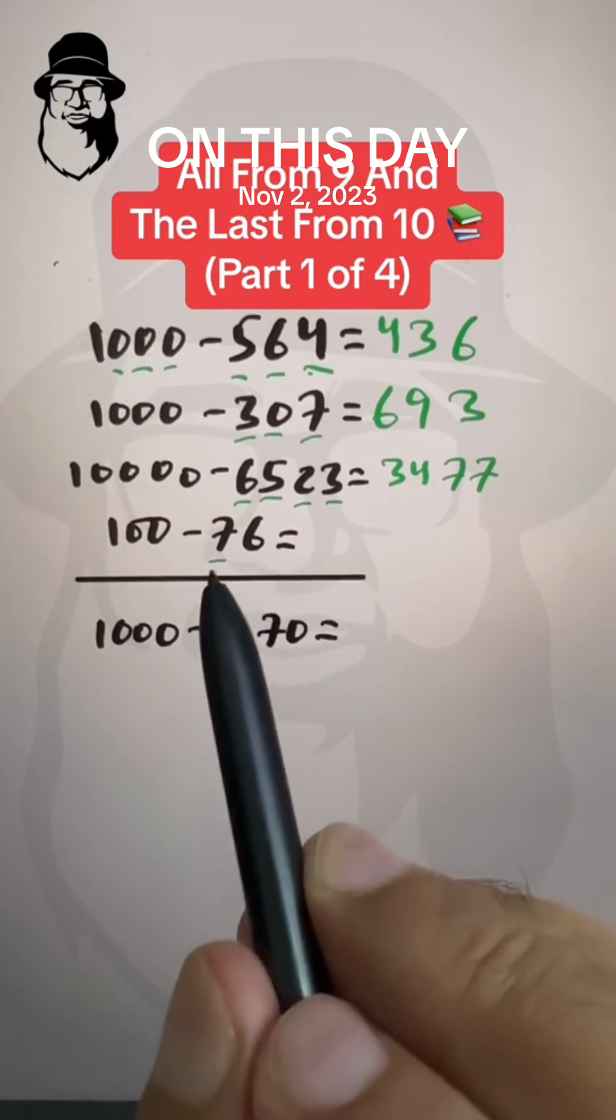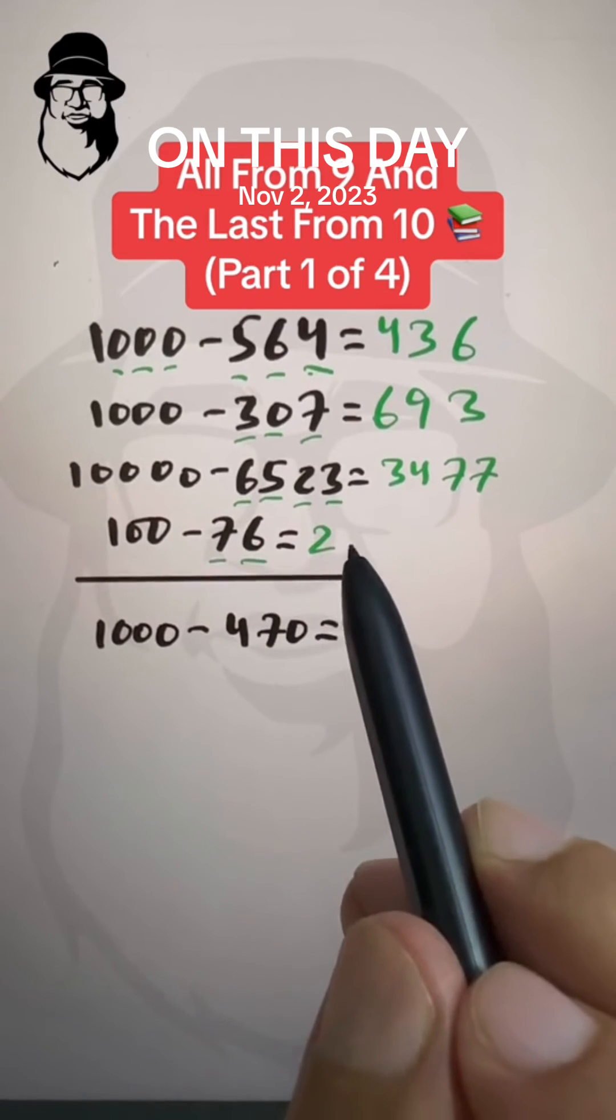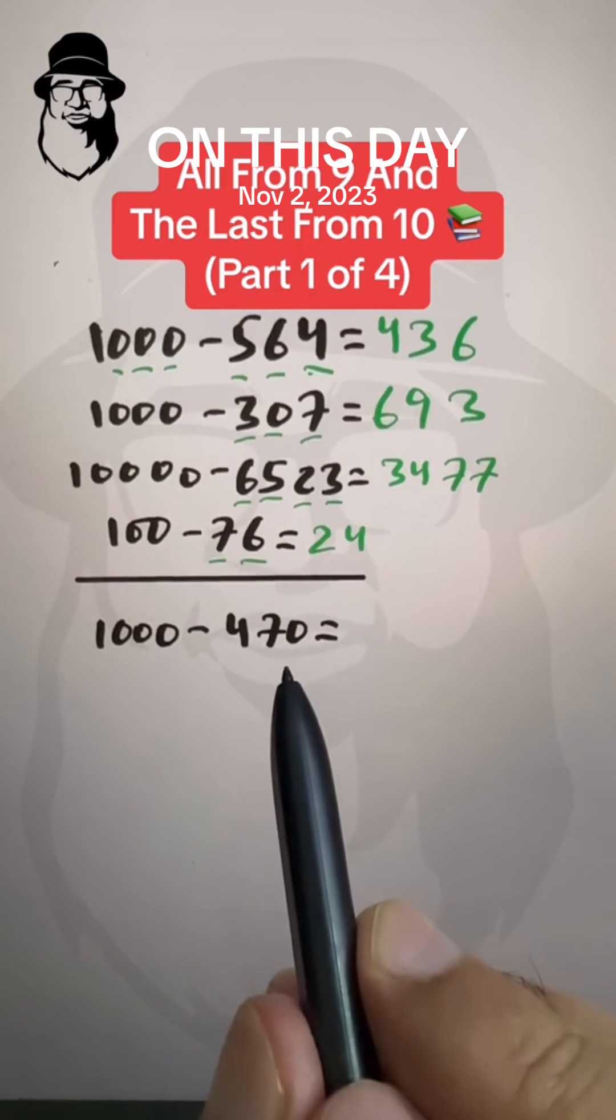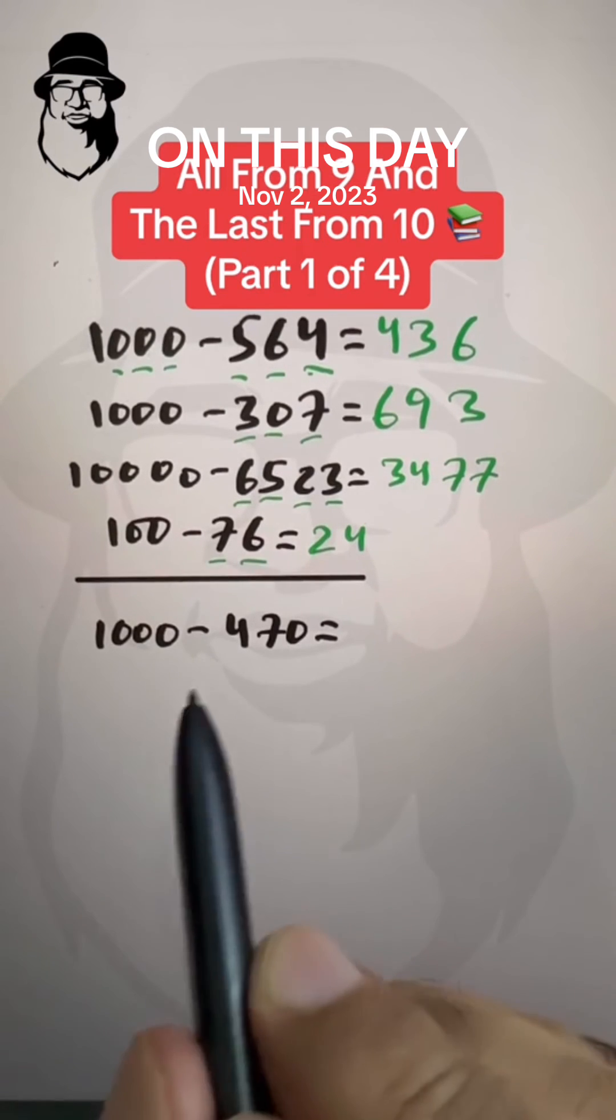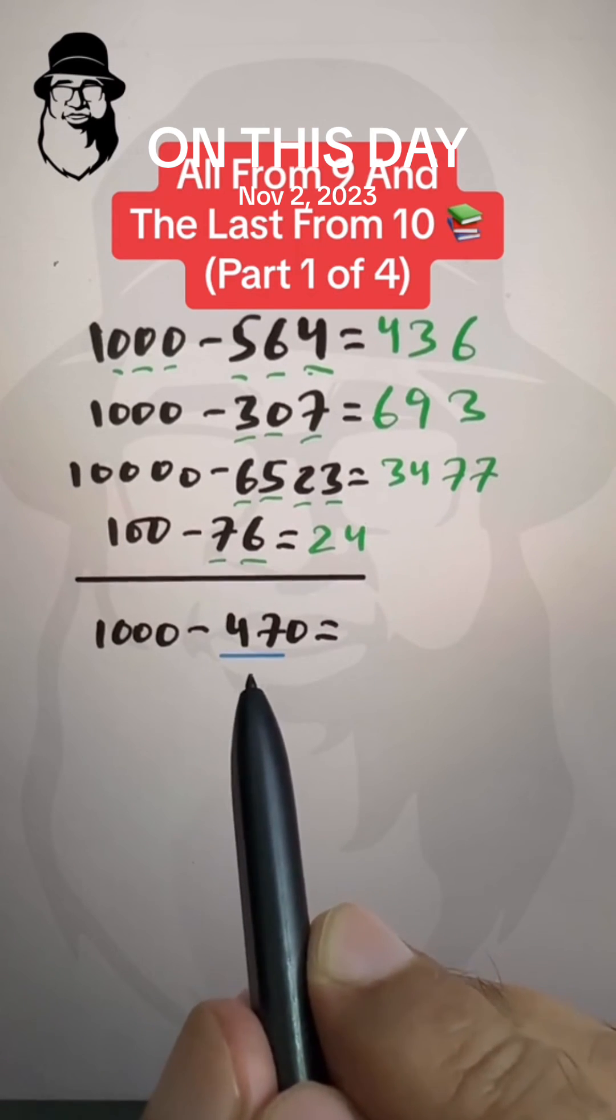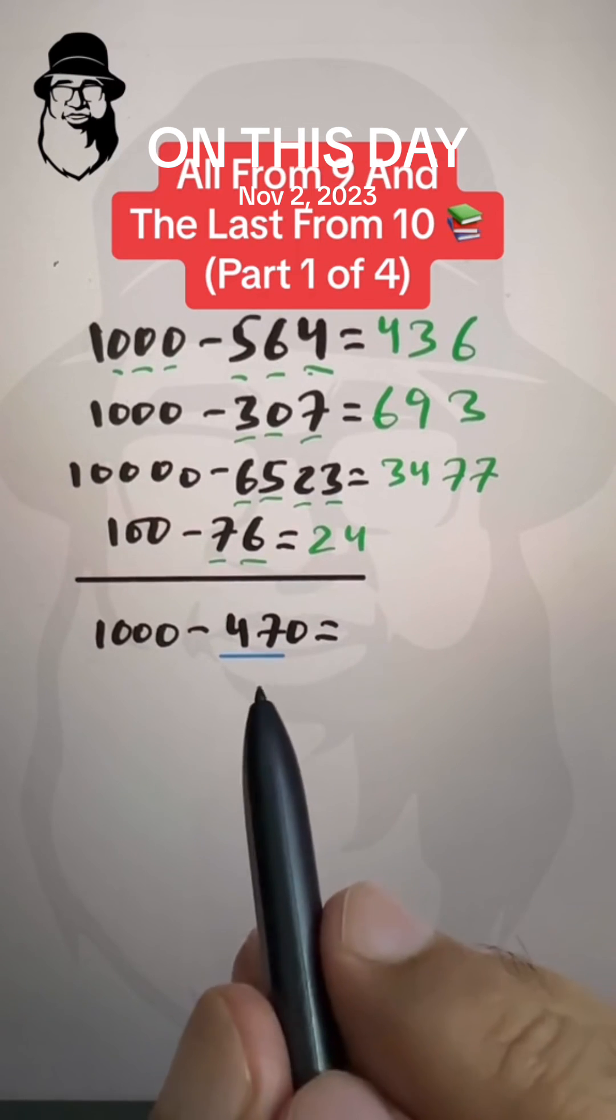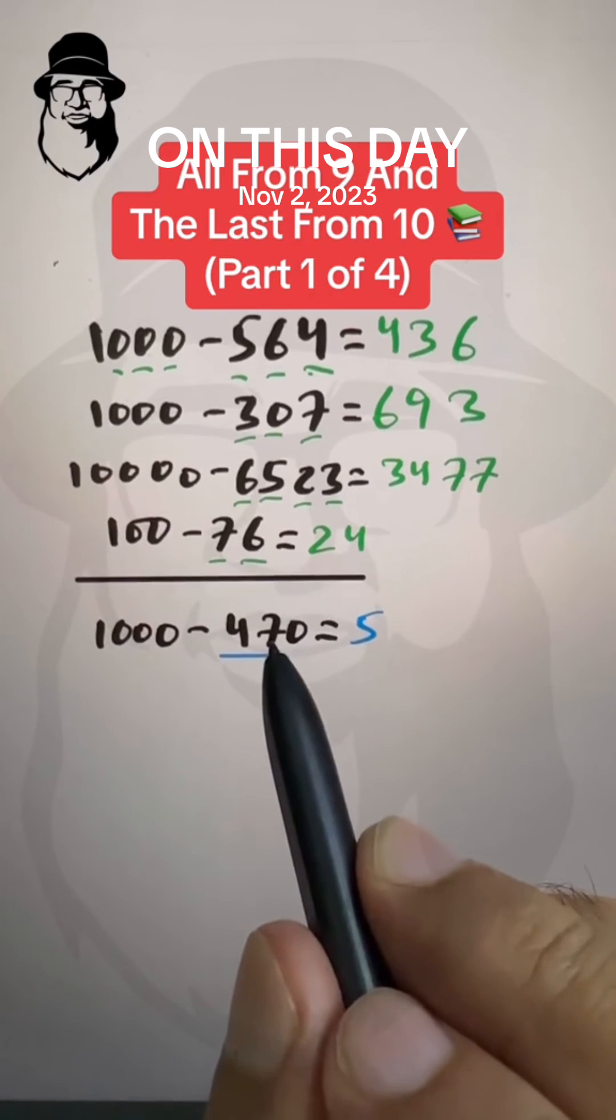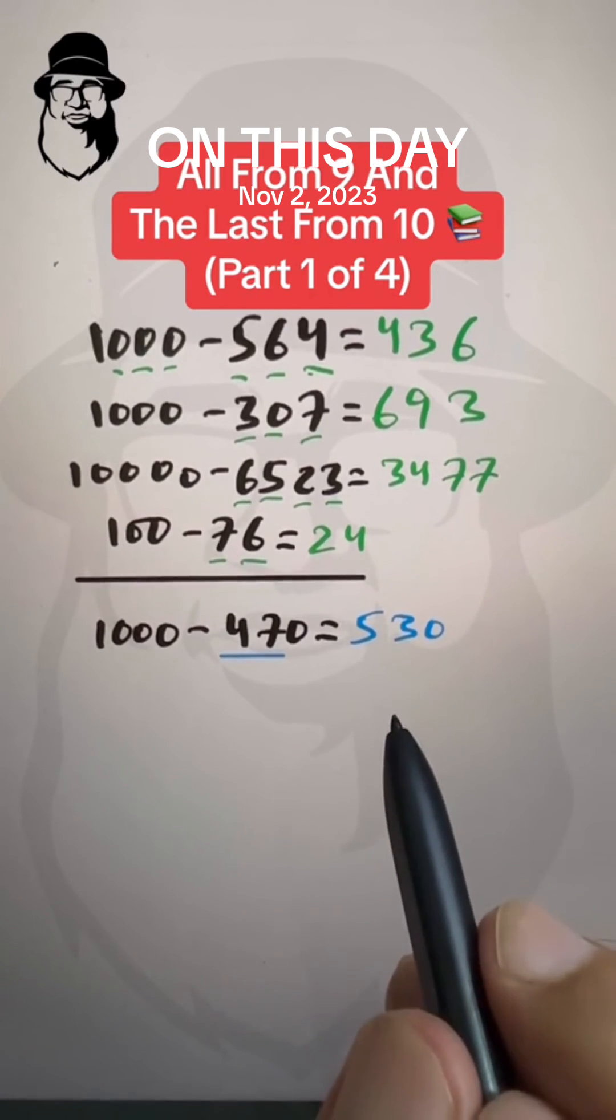So here, 7 from 9 is 2, and 6 from 10 is 4. But be careful here, when we have 0 in the number we apply the all from 9 and the last from 10 formula only on the digits that are with 0, and in the end we put 0. So here, 4 from 9 is 5, and 7 from 10 is 3, and then we put this 0. So that's our answer.